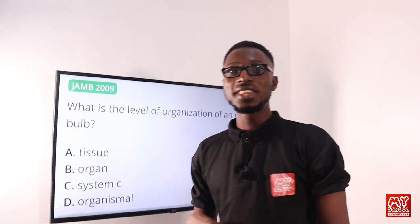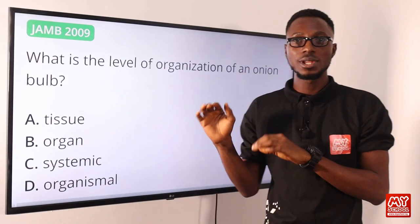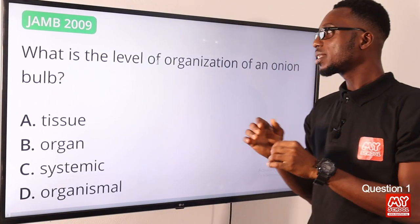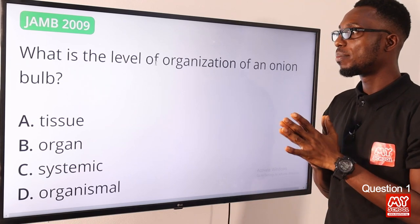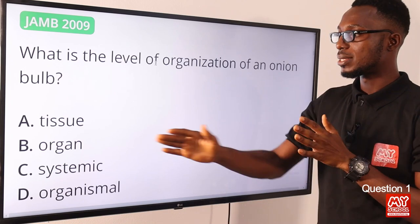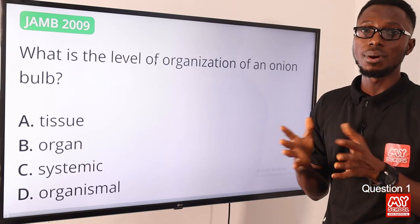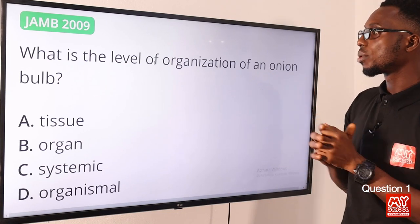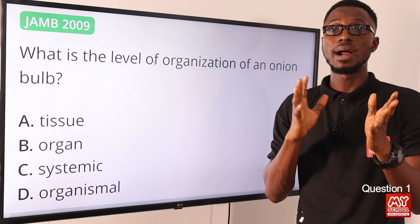Welcome back to my school channel. We are going to join together to solve questions 1 to 25. Let's begin with question one: what is the level of organization of an onion bulb? The onion bulb is an example of an organ. In plants, just as in animals, organs include your liver, your heart, your kidney, and so on.